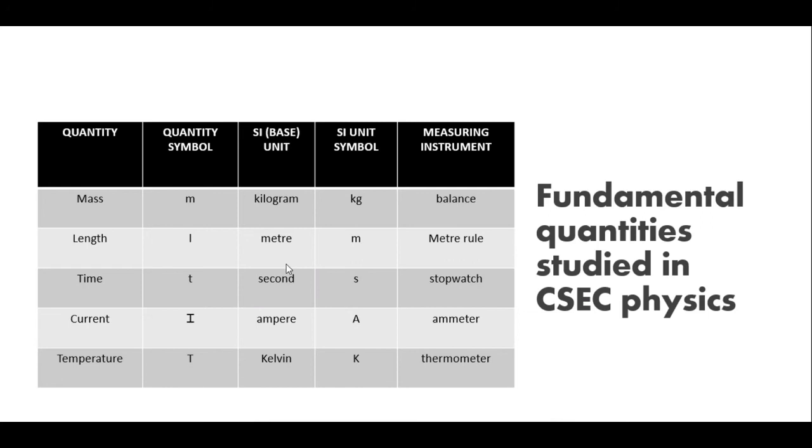Now if you look in the last column, you'll see the measuring instrument. We're seeing here for mass we have a balance. Length is a meter rule. Time is a stopwatch. Current is an ammeter, which I know we're probably not too familiar with that. And temperature, which we know is measured using a thermometer.